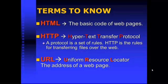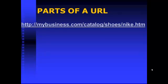A URL — the letters stand for Uniform Resource Locator — is basically just the address of a web page. Let's look at the parts of a URL. This is a made-up address, so it should not take you anywhere. We start with: HTTP colon slash slash mybusiness.com slash catalog slash shoes slash nike.htm. Let's break these parts of this URL down.